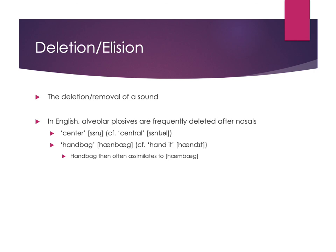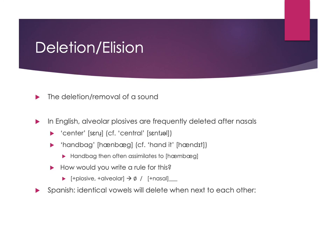'Handbag' can also assimilate further because of the following B, becoming 'hambag' with an M sound. We write deletion rules by saying: our sounds that are [+plosive, +alveolar] become the null symbol — they delete, becoming nothing — and then we write the environment. Spanish also uses deletion when identical vowels are next to each other across a word boundary: 'mi hijo' typically drops one of the vowels and becomes 'mijo', which is even spelled as a single word in Spanish because the deletion happens so frequently.